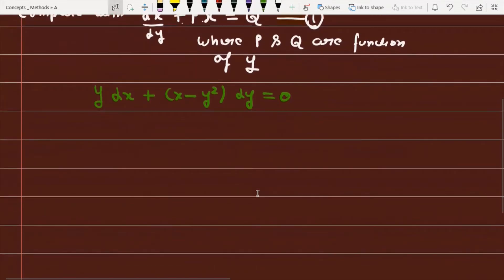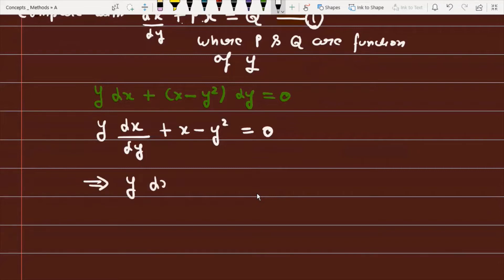Given the differential equation, first divide by dy: y(dx/dy) + x - y² = 0. Or we can write: y(dx/dy) + x = y².